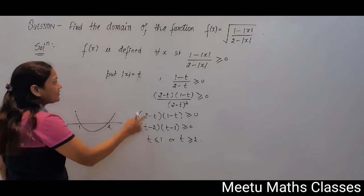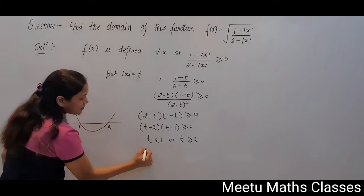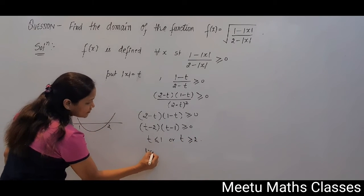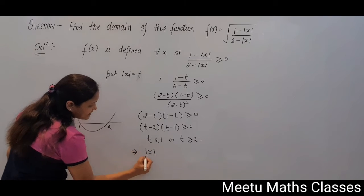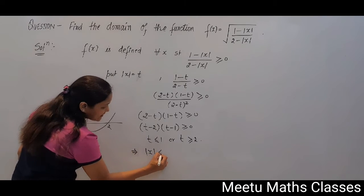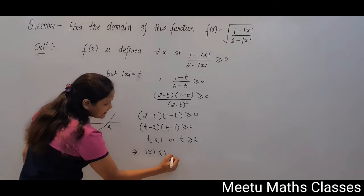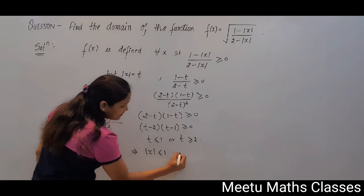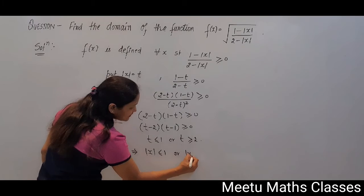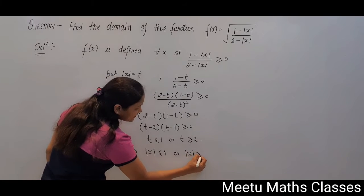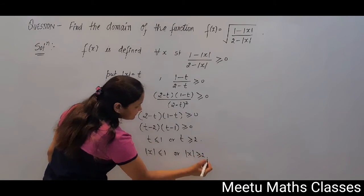Your t is |x|. So this implies that |x| ≤ 1 or |x| ≥ 2.